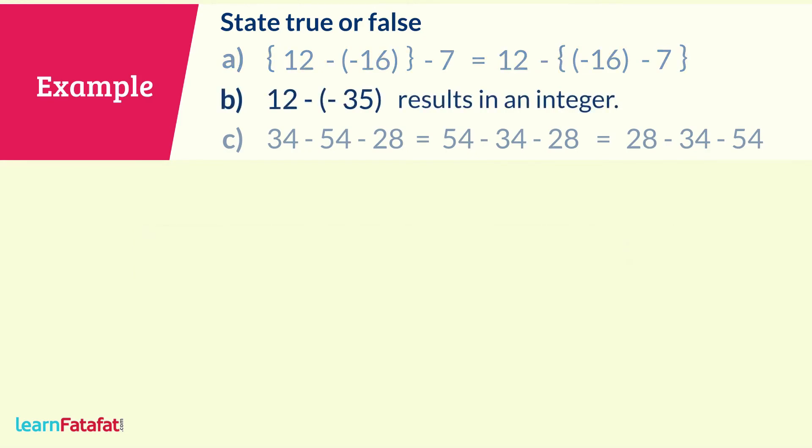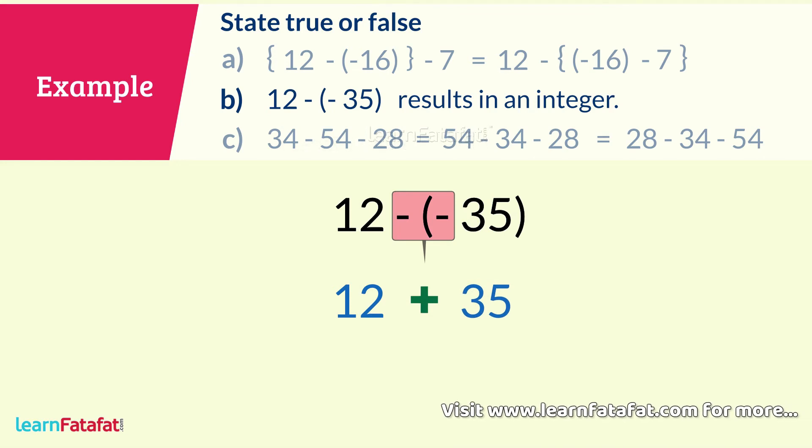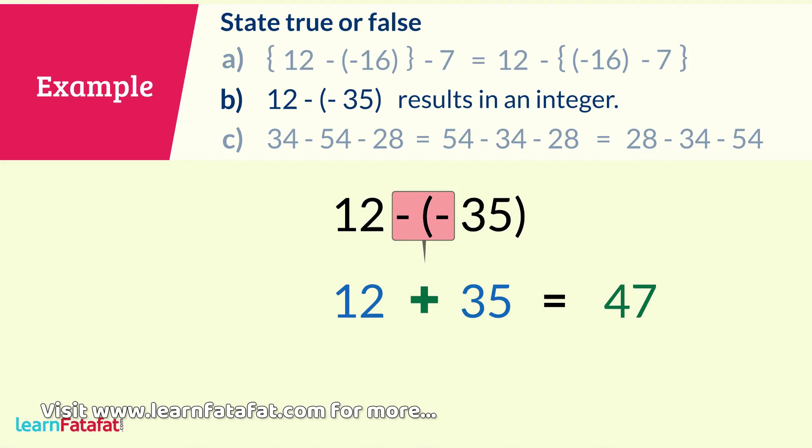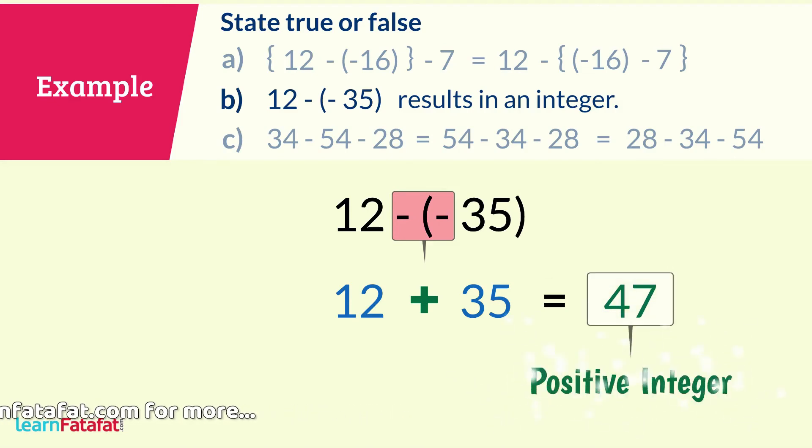Second, the subtraction 12 minus minus 35 can be converted to addition by keeping the first number as it is, changing the subtraction sign to an addition sign, and changing the sign of the second number. So, the problem becomes 12 plus 35 equals 47. 47 is a positive integer. So, statement B is true.